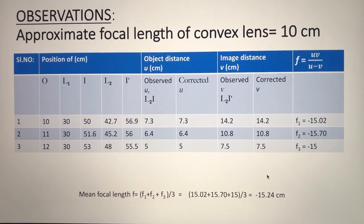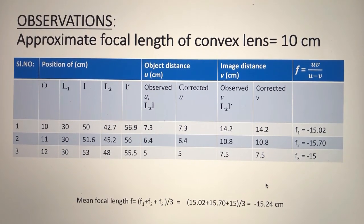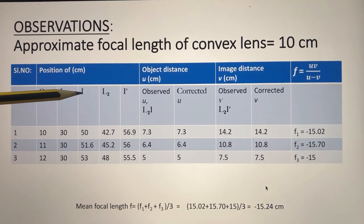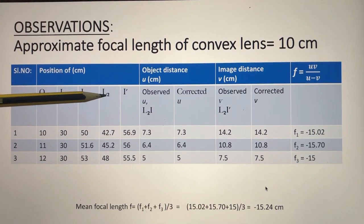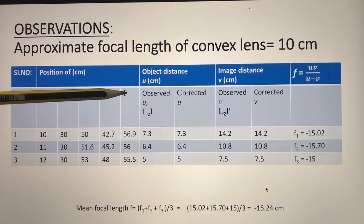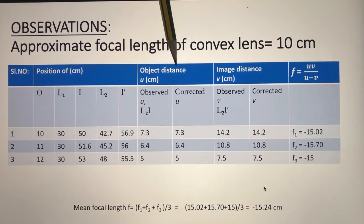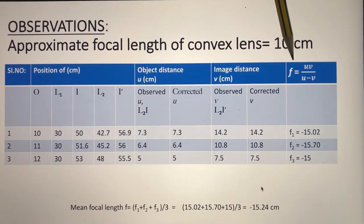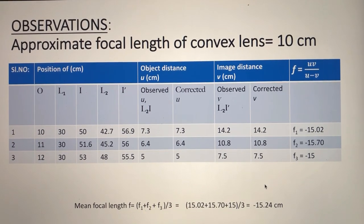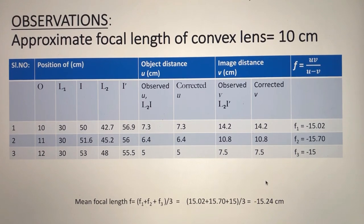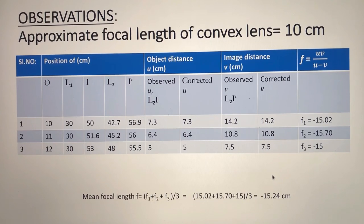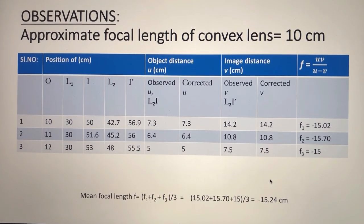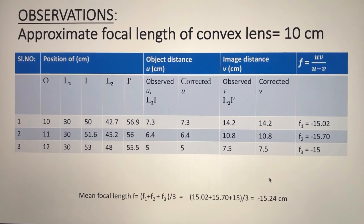The approximate focal length of the convex lens was found to be 10 cm. The observation table includes: object position, position of the convex lens, image formed by the convex lens, position of the concave lens, image formed when the concave lens was kept, observed and corrected U, observed and corrected image distance V, and F = UV/(U − V). From the three readings: F1 = −15.02 cm, F2 = −15.70 cm, F3 = −15 cm. Mean focal length F = (F1 + F2 + F3)/3 = −15.24 cm.